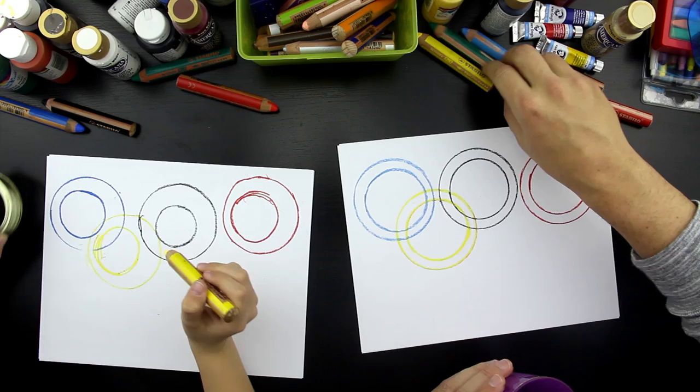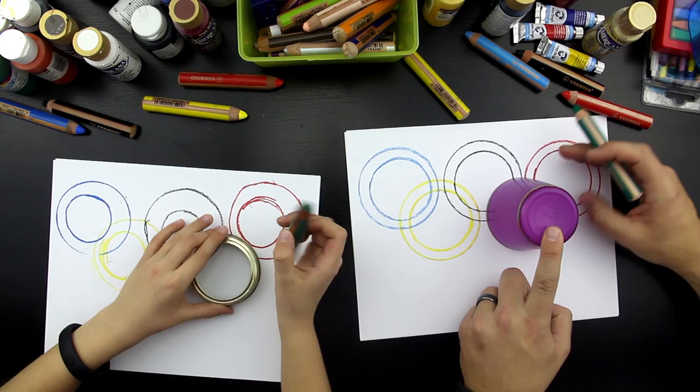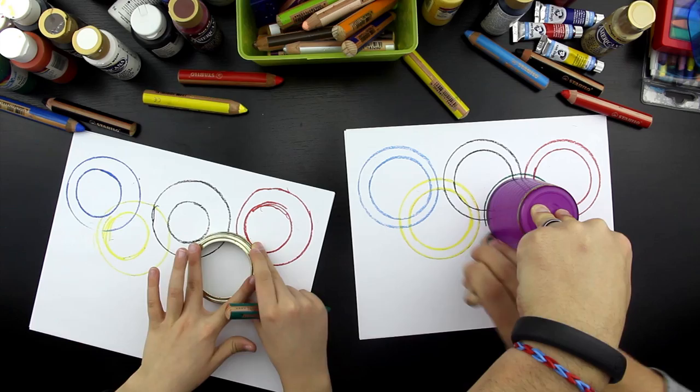And then the last color we're going to do is green. And we do the same thing. Overlap the black and the red ring this time. And then go all the way around.